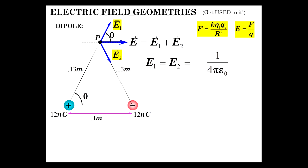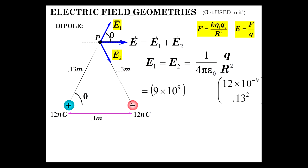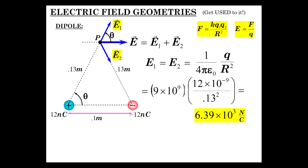That is 1 over 4 pi epsilon-zero, Q over R squared. That's 9 times 10 to the 9th. Q, which is 12 nanocoulombs, over 0.13 squared — 6.39 times 10 to the 3rd. So there is the size of the electric field from each of the point charges.